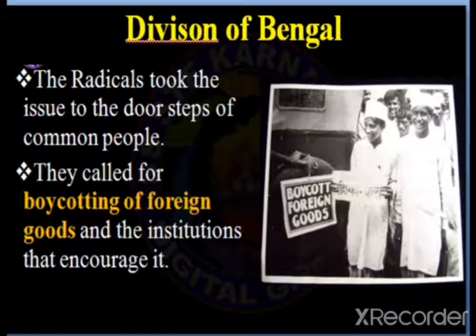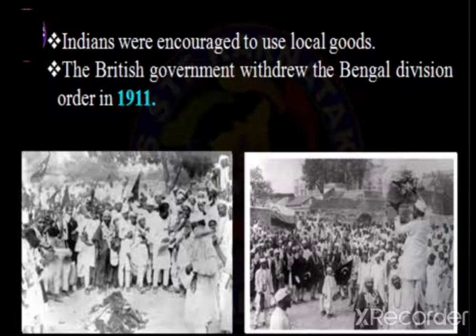Radical leaders like Bal Gangadhar Tilak and many others opposed the division of Bengal. They conducted many programs like Rakshabandhan, Ganesha Chaturthi, Shivaji Jayanti, and Durga festival. They took the issues to the doorsteps of the common people to boycott foreign goods, foreign education, and institutions. Indians were encouraged to use local goods. Finally, the British realized it was of no use dividing Bengal in the name of Hindus and Muslims, so the British government withdrew the Bengal division order in 1911.